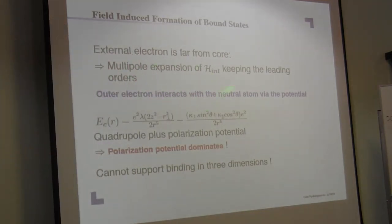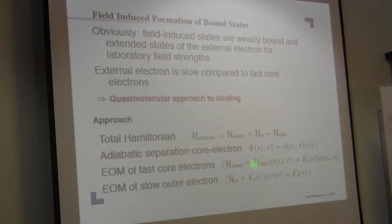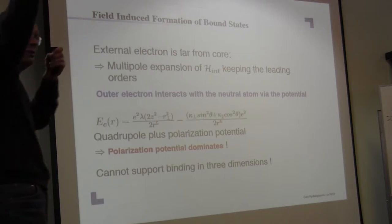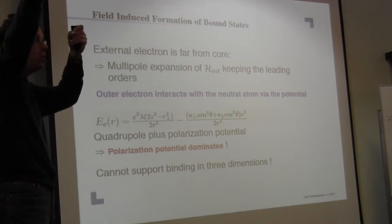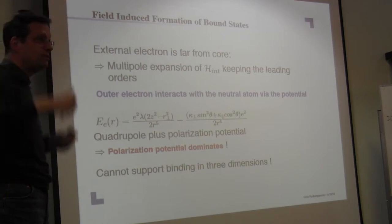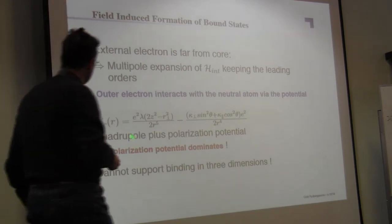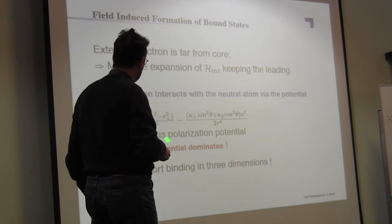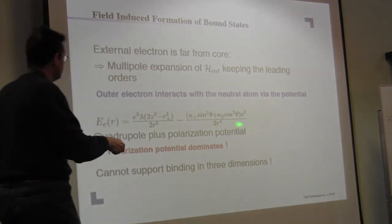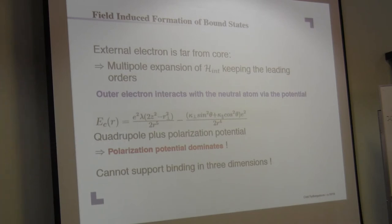So now, how to get a hold on this interaction term? The interaction of the external electron with the core, this has a charge and this is neutral. If you do a multipole expansion, what you get is first a quadrupole term, and then a polarization potential. These two terms are given here. Now look at this, this term is quadrupole, it is anisotropic, it has that quadrupole angular dependence.